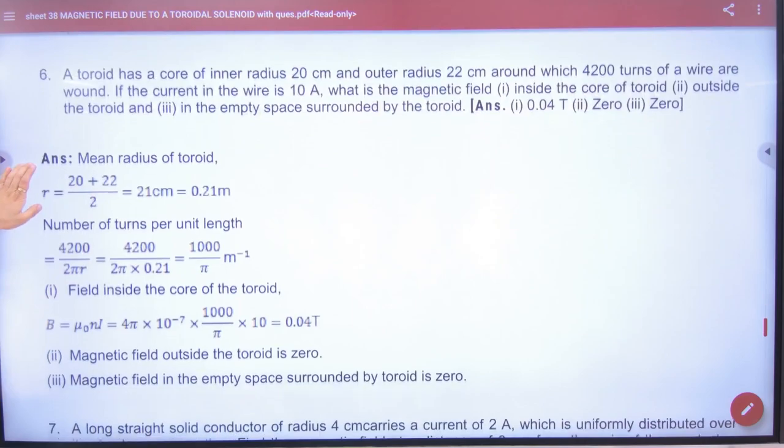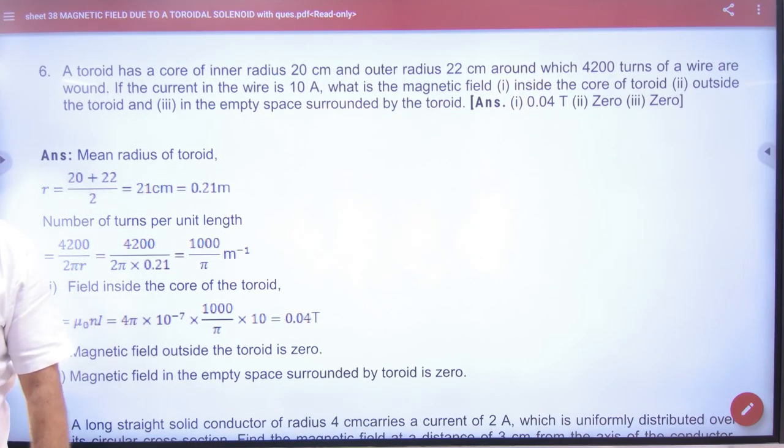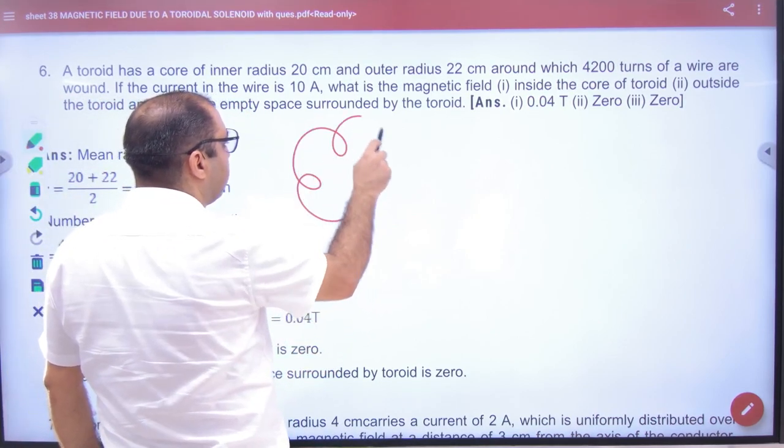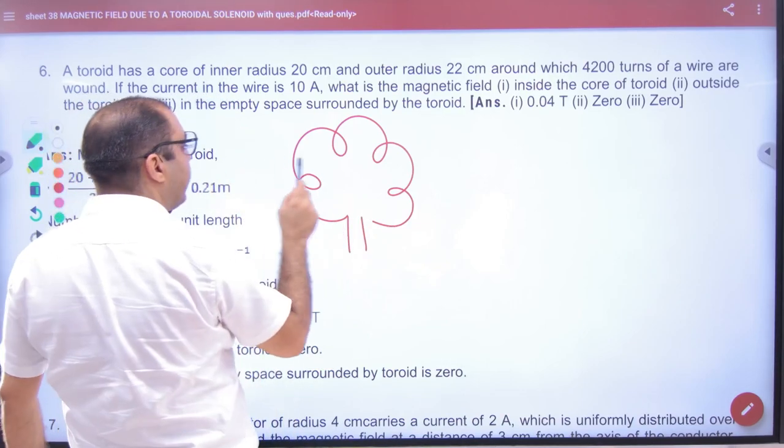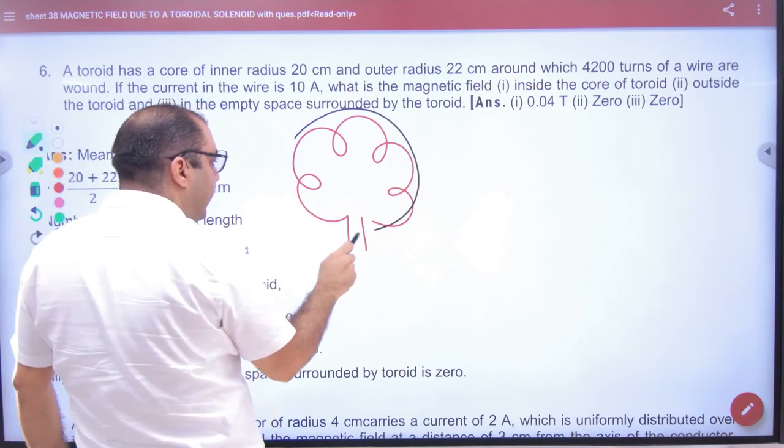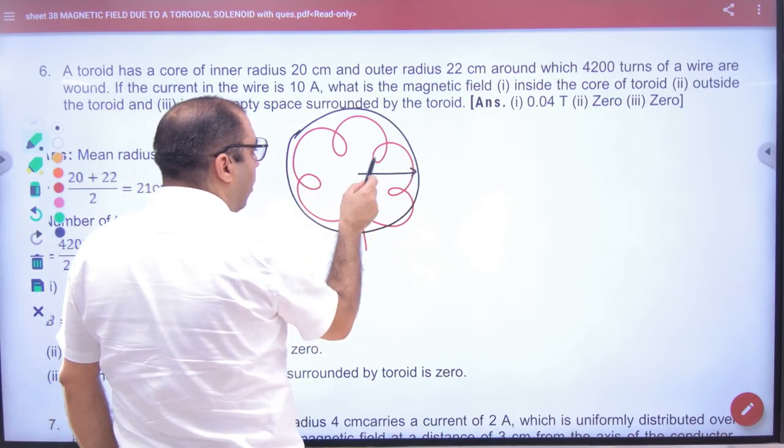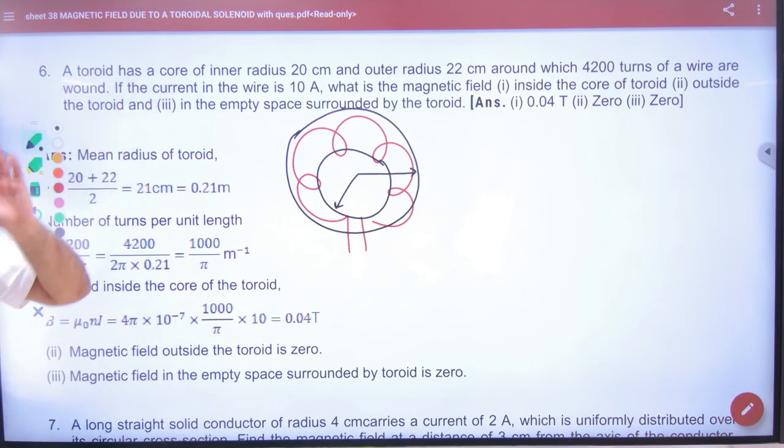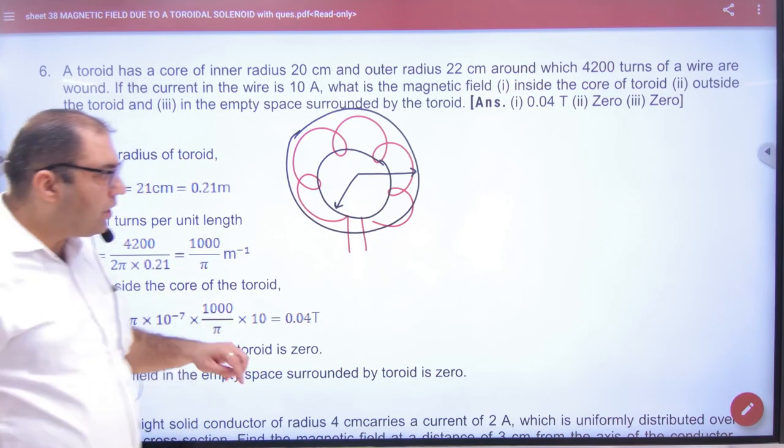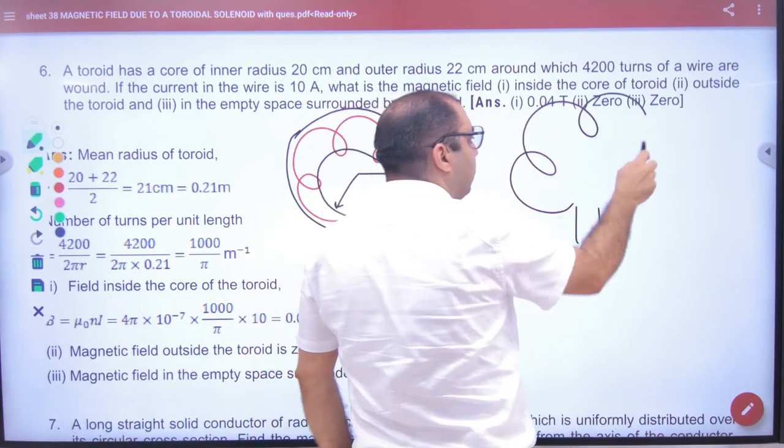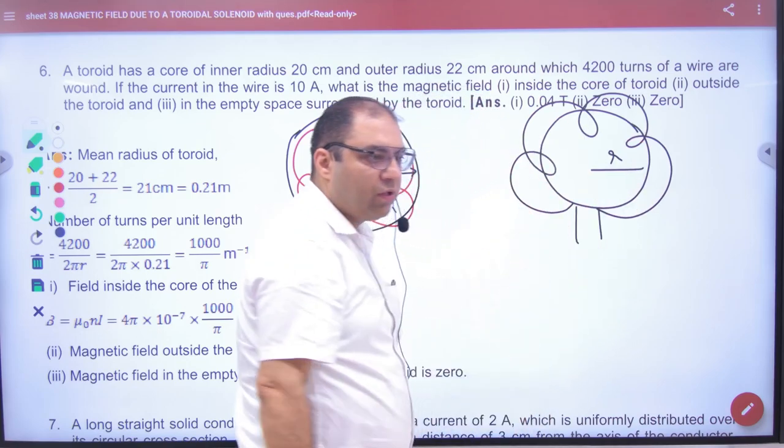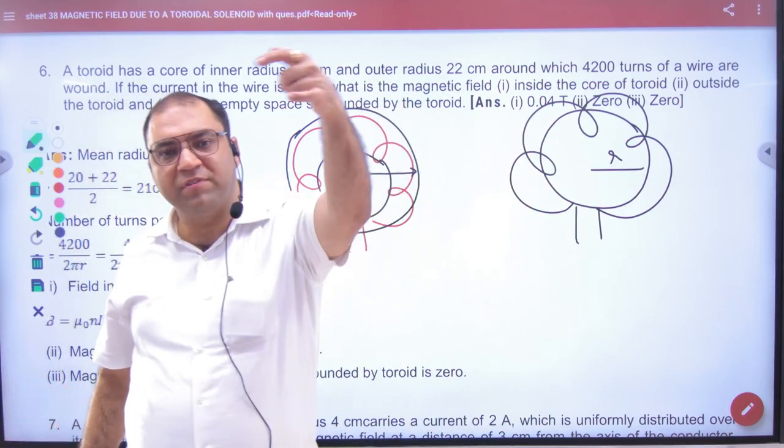Question number 6. The radius inside is different from the outside radius. This radius is the outside radius and this radius is the inside radius. When we use the toroid, we use a specific radius. Remember the derivation - we take the radius exactly from the axis.